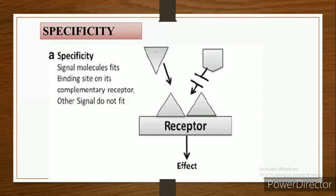See, this is a certain signal which binds to the specific site of the complementary receptor and shows the effect. But this signal does not bind to the complementary receptor and does not show any response. This is specificity.